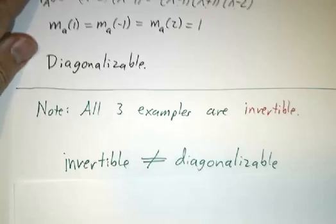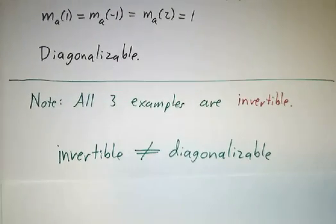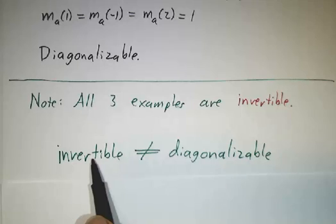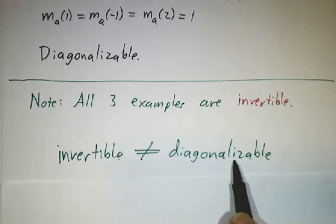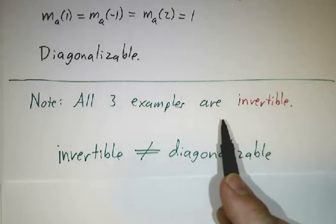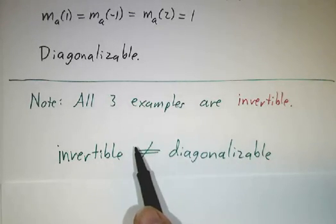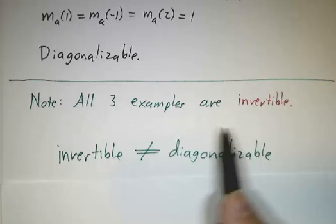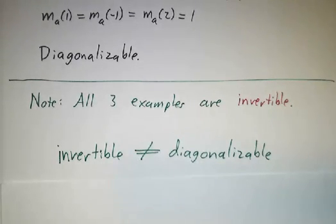By the way, all three examples were invertible matrices. People often confuse invertible matrices with diagonalizable matrices. They have nothing to do with each other. You can have invertible matrices that aren't diagonalizable. You can have non-invertible matrices that are diagonalizable. Two completely different concepts.